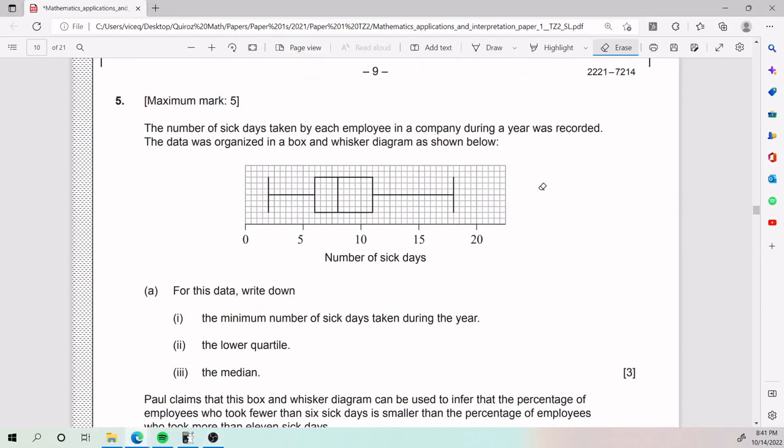Alright, so for number five, we have the number of sick days taken by each employee in a company during a year. It was recorded and the data is organized into a box and whisker diagram as shown below.